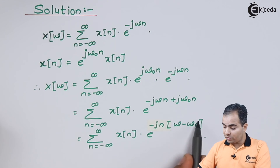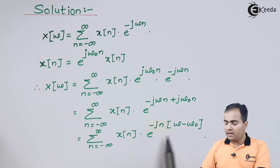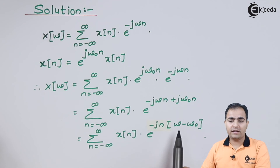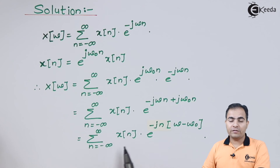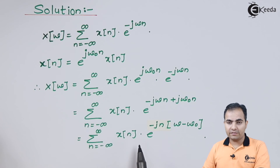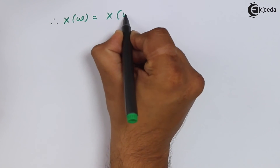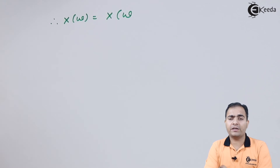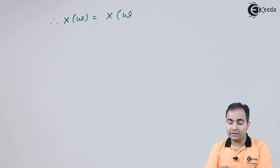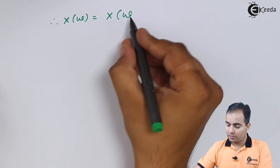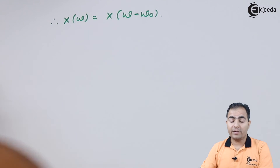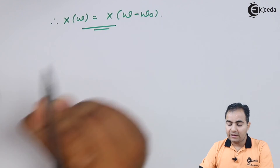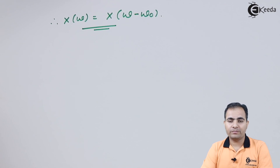Now suppose if I assume this whole bracket is nothing but omega — that is, let's substitute omega minus omega naught as omega — then this will be nothing but the definition of discrete time Fourier transform. The whole equation becomes the definition of DTFT of x of n, but with omega replaced by omega minus omega naught. So we substitute back: x of omega becomes X of omega minus omega naught, and this is nothing but the frequency shifting property of DTFT.